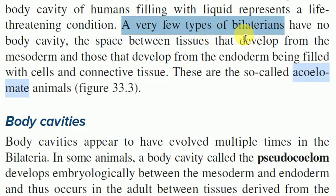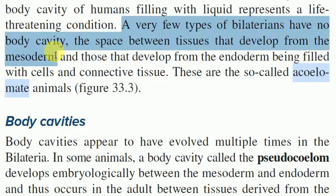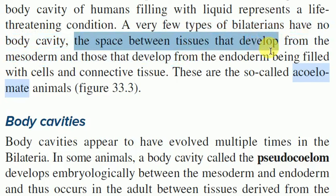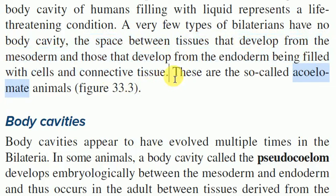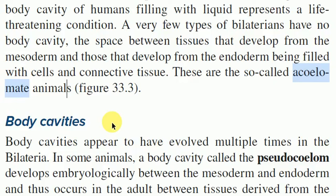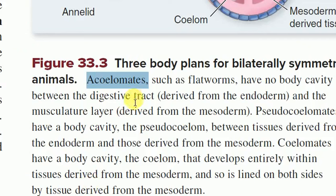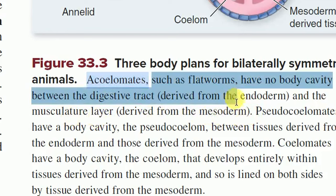A very few types of bilaterians — animals which possess bilateral symmetry — have no body cavity. The space between tissues that form from the mesoderm and those that develop from the endoderm is filled with cells and connective tissue. These are so-called acoelomate animals. Acoelomates such as flatworms have no body cavity between the digestive tract derived from the endoderm and the muscular layer derived from the mesoderm.